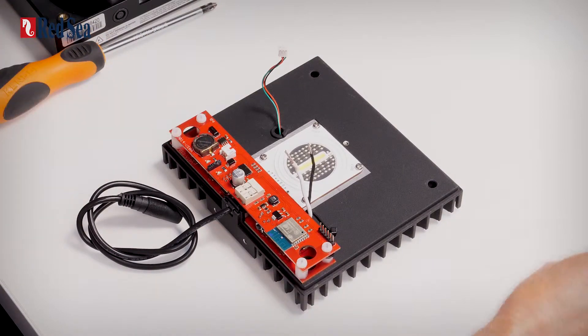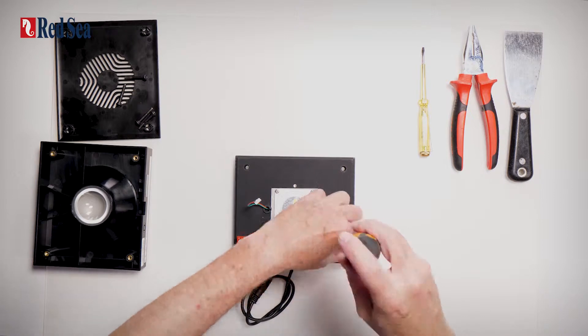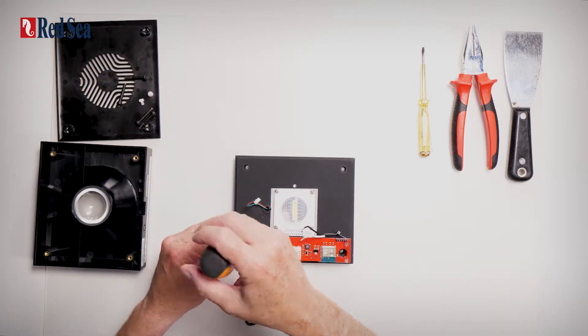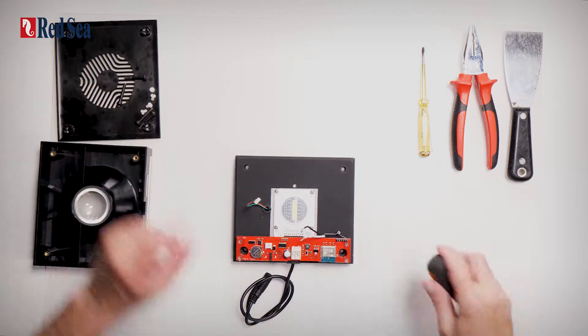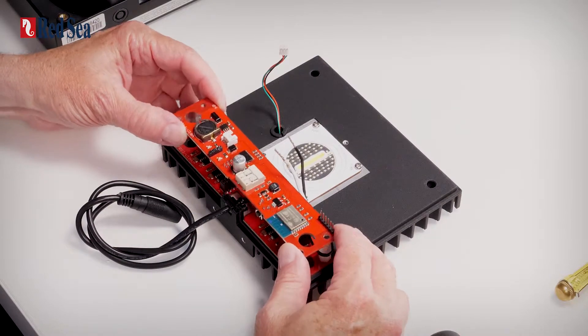We have four screws on top that need to be removed. Let's just put them all nicely on one side. And then gently remove the board.